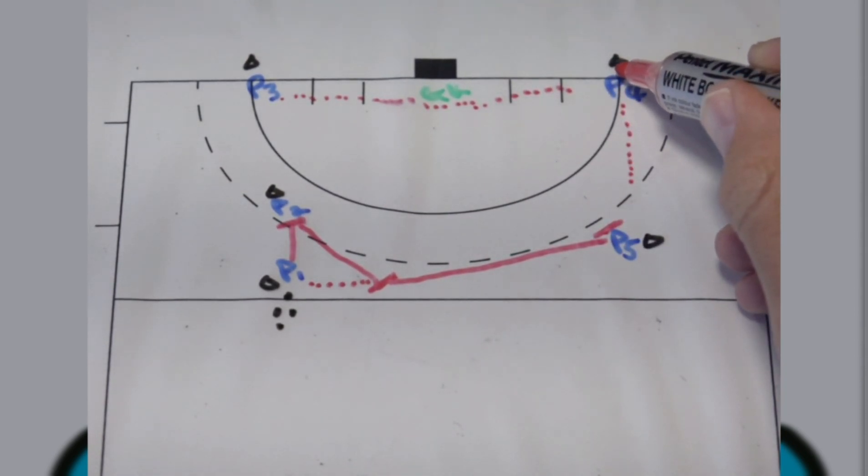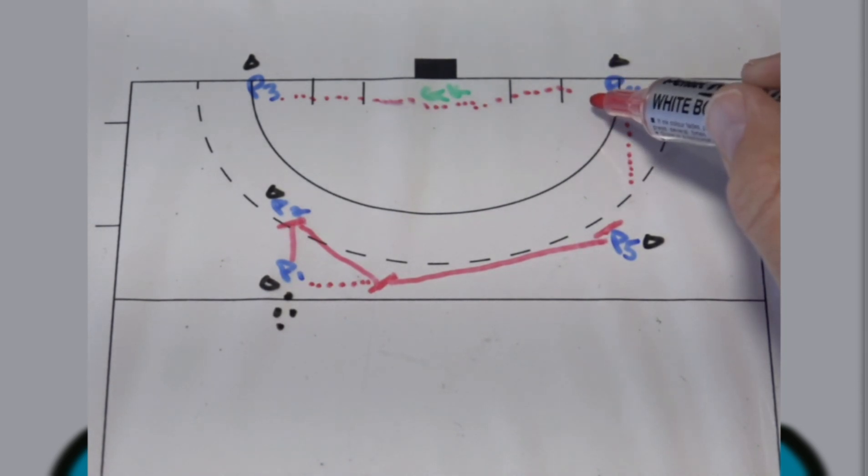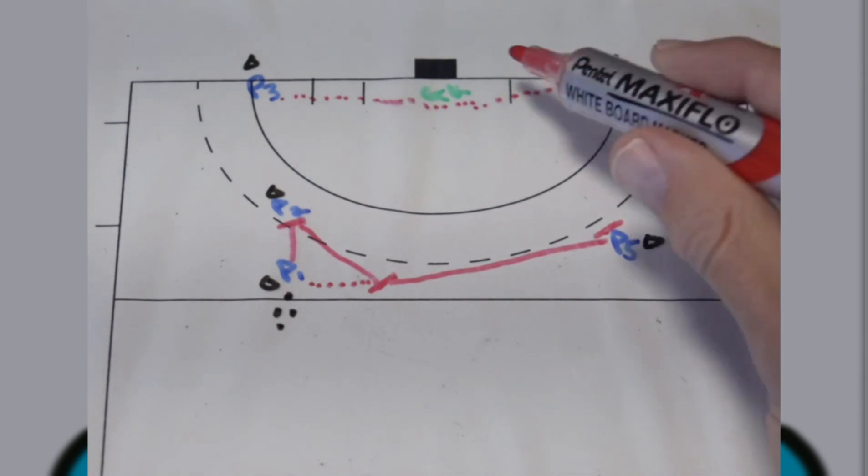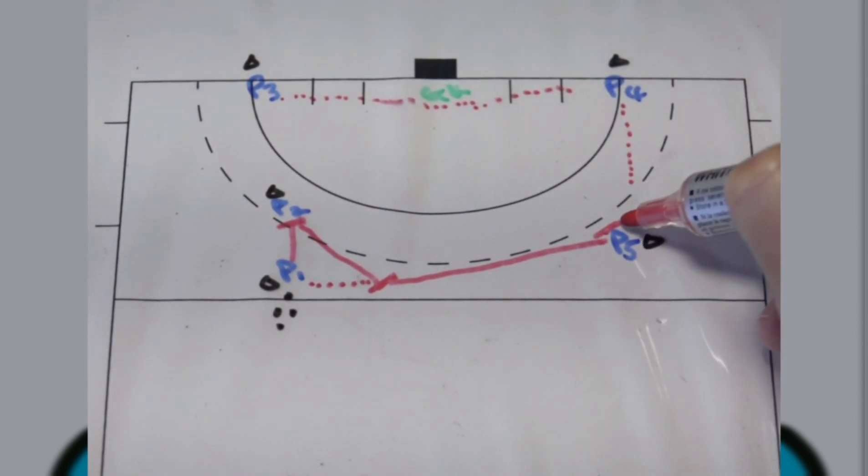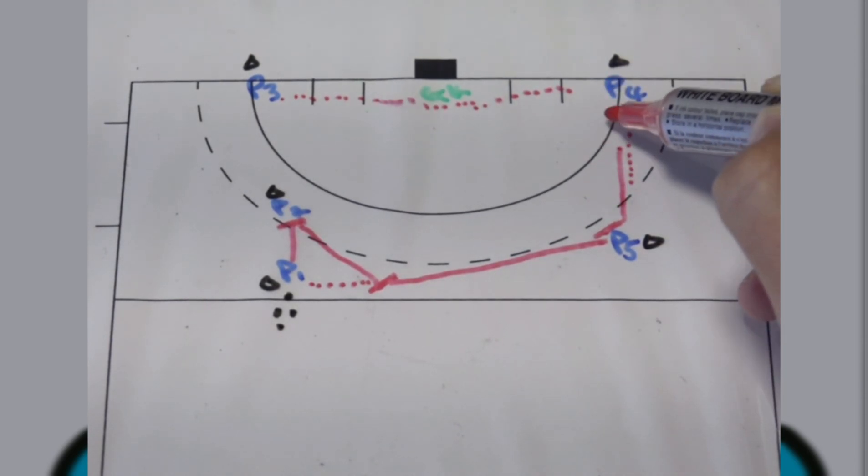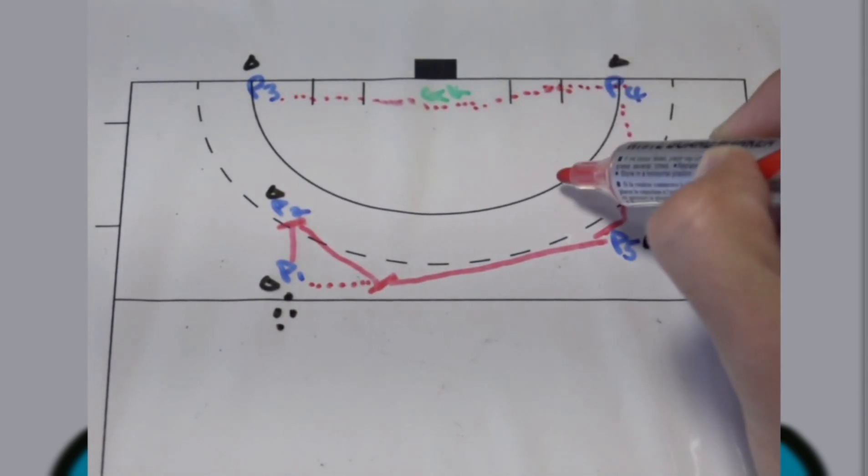But then player four will only be like a decoy, so it's going to be passing to player four but they need to leave the ball so that player three can pick it up in this area. So player five will pass the ball through player four and then player three will pick it up here and then they will drive back into the circle.